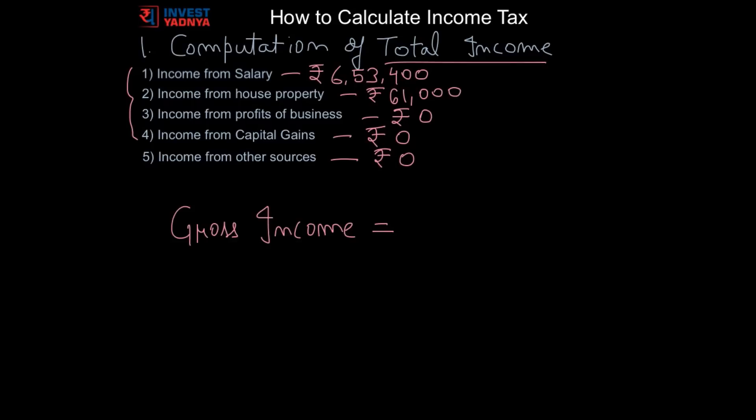So total gross income for Sunil is income from salary plus income from house property which is Rs 7,14,400.